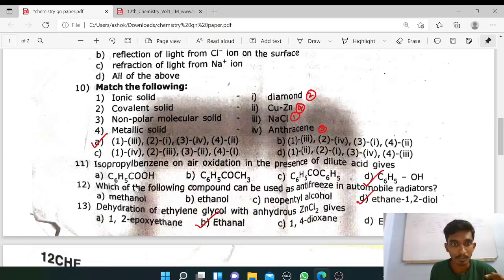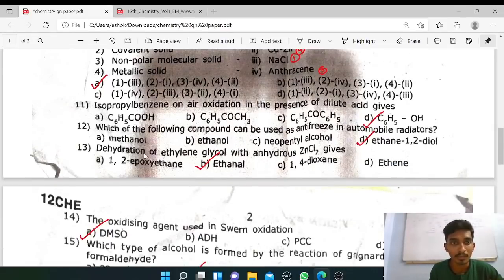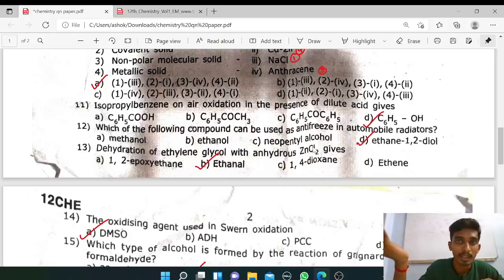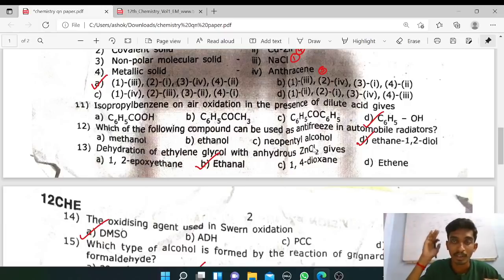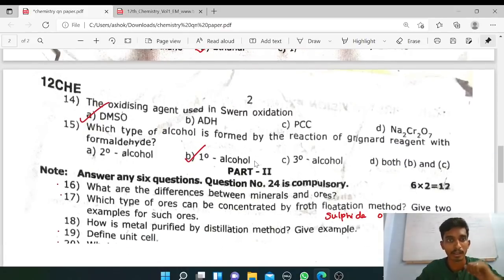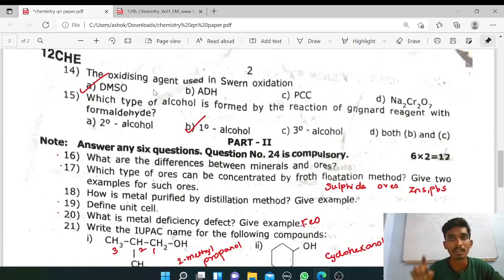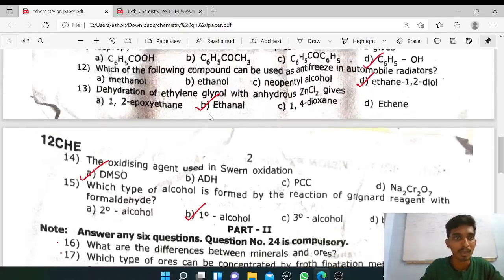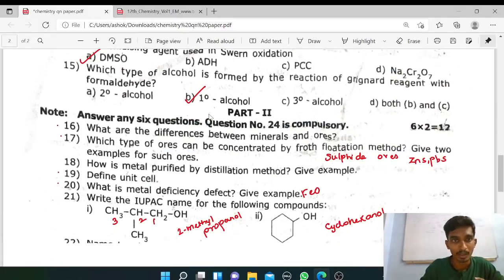Tenth question, match the following, four types of solid. Option A: ionic solid NaCl, covalent solid diamond, non-polar molecular solid anthracene, metallic solid copper. This is all book back, so three book back questions together. Eleventh question book back. Twelfth question book back, ethylene glycol. Thirteenth question book back, dehydration of ethylene glycol using anhydrous zinc chloride. So only one word support, the difficulty maybe in the 13th question you get, but it's not a problem, it's an easy question.